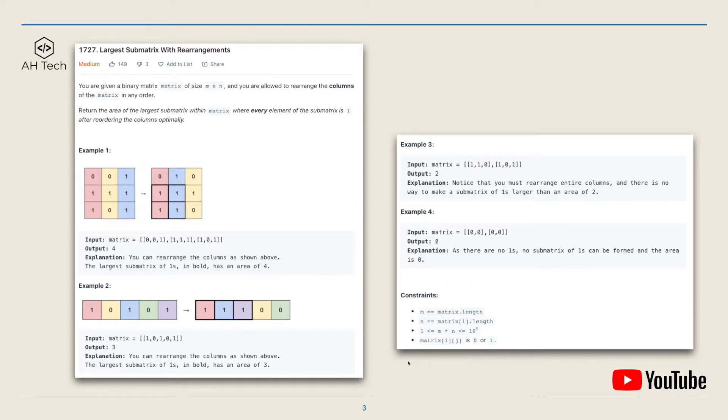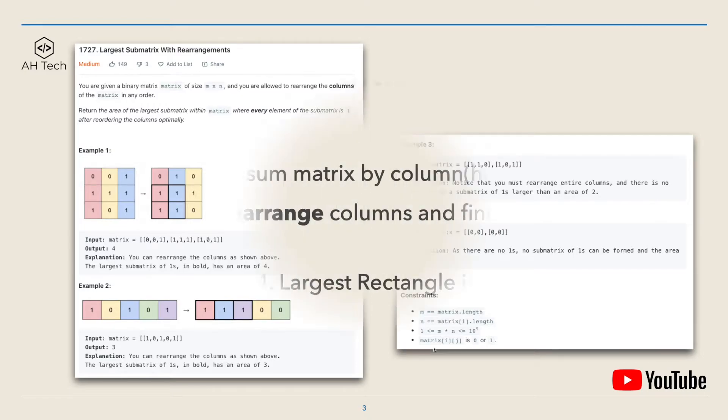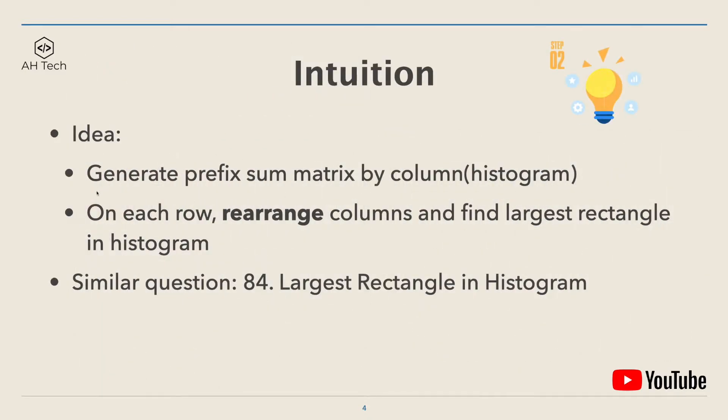The data constraint for this question: the number of rows and columns of the input matrix can go up to 10 to the power of 5. And this is a pretty tricky question in my opinion. The main intuition to solve this question first is to generate a prefix sum matrix by the column direction.